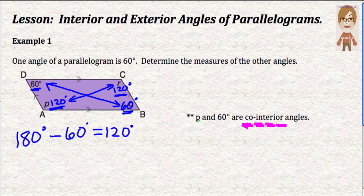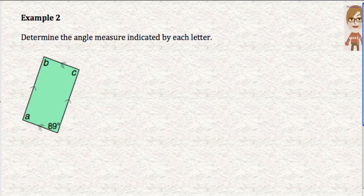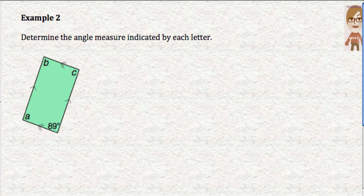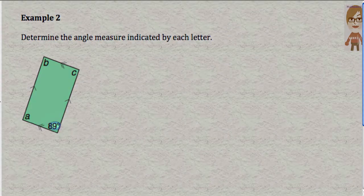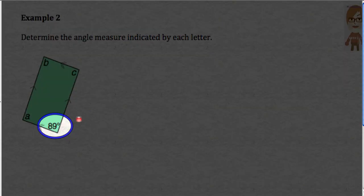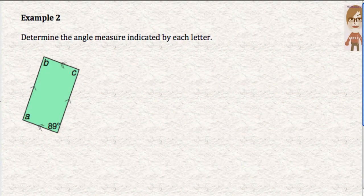So just one more quick example here. Example two, determine the angle measure indicated by each letter. So this time they're only giving us this here. They're only giving us one angle. They're not giving us anything else in this parallelogram except 89 degrees.